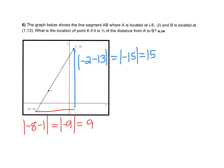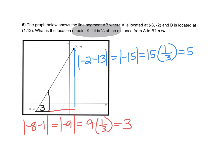Now that I know the distances, I'm going to calculate one-third of each, because point K is one-third of the distance from A to B. I'll multiply both numbers by one-third: nine times one-third is three, and fifteen times one-third is five. So in order to find point K, I need to go three units to the right and five units up from point A.